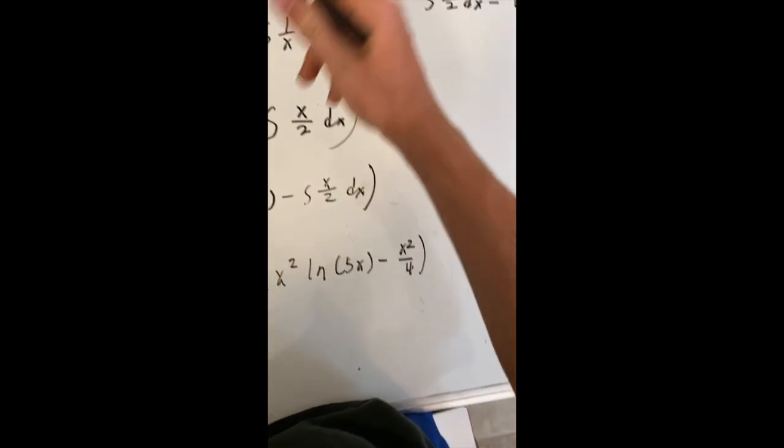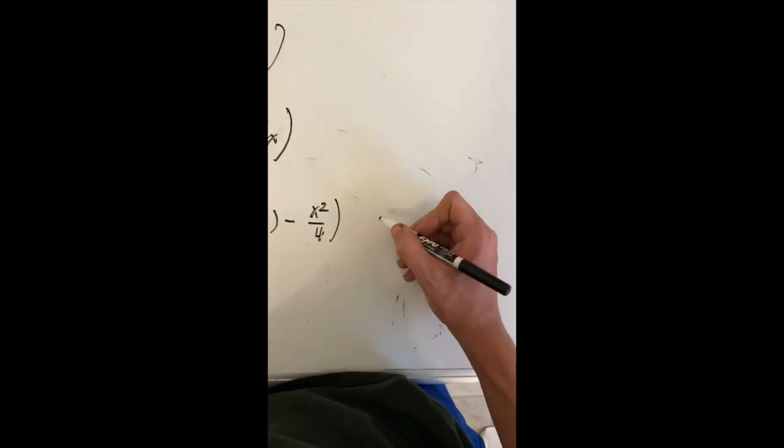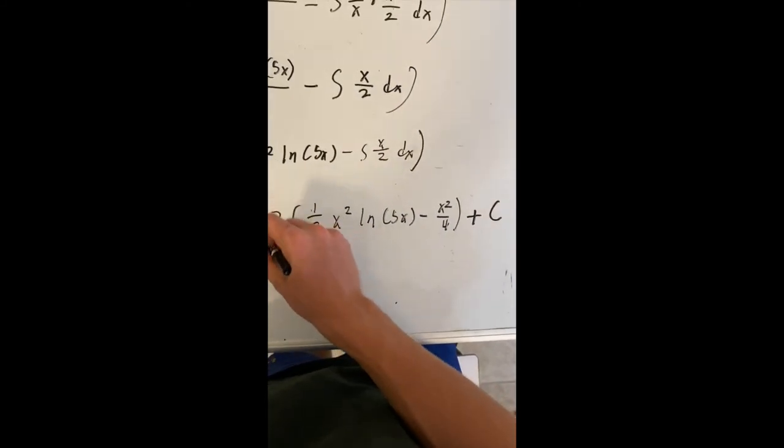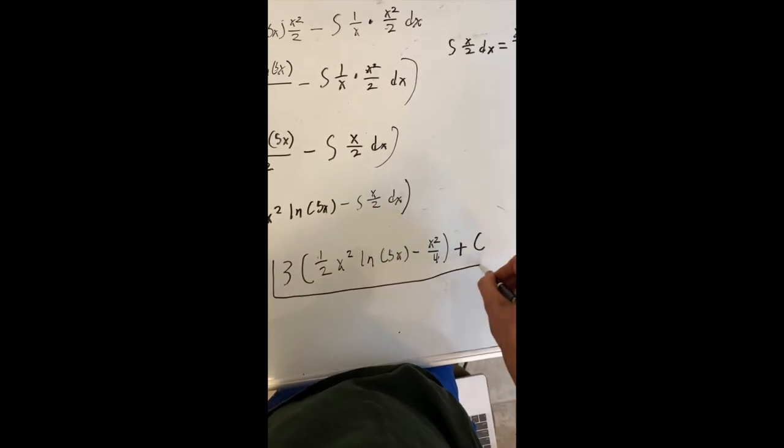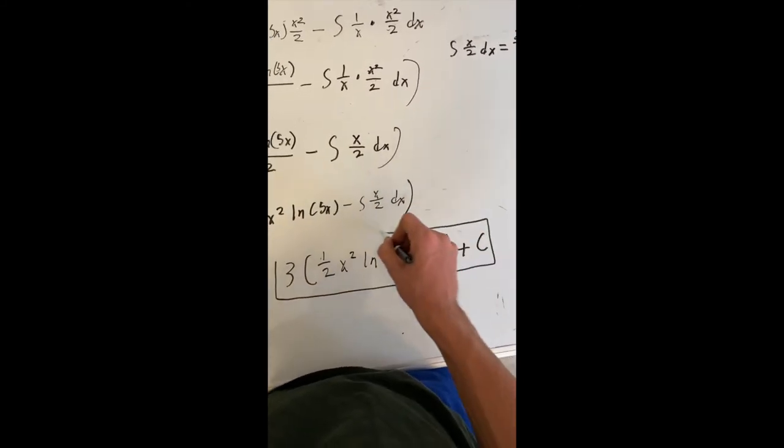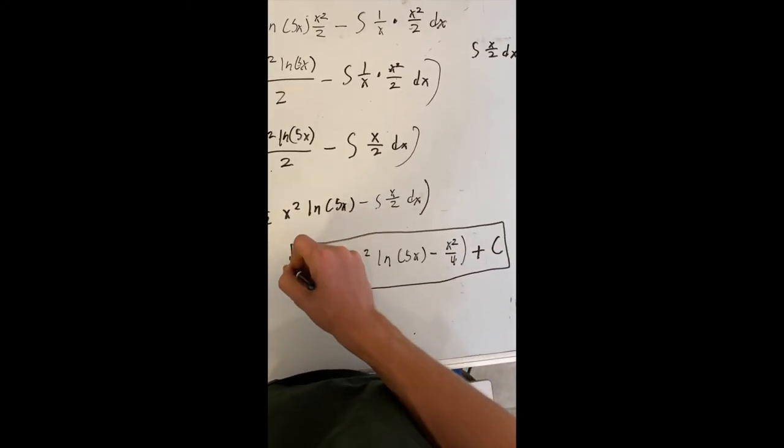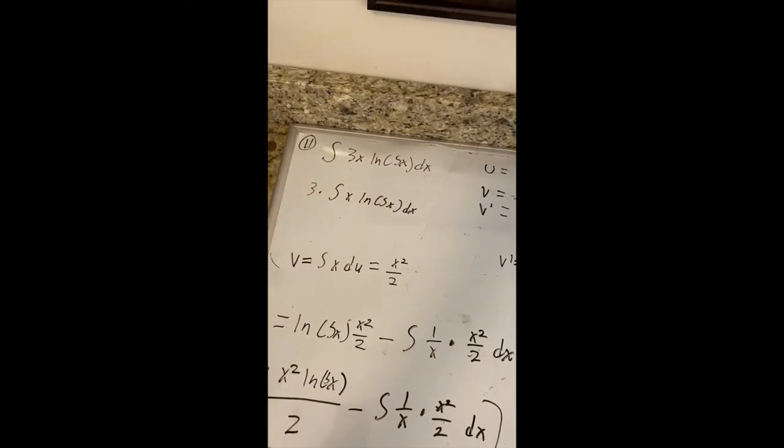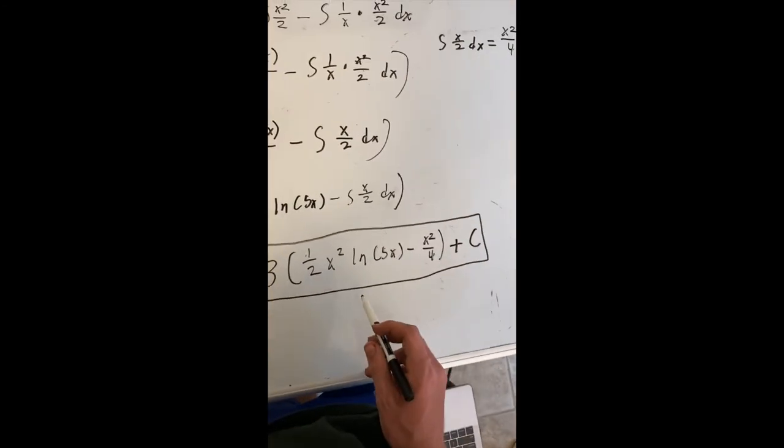And then, all together, we want to add a constant. So we're going to add plus c. And that is your final computed answer of integral of parts of integral of 3x ln 5x dx. That's your final answer.